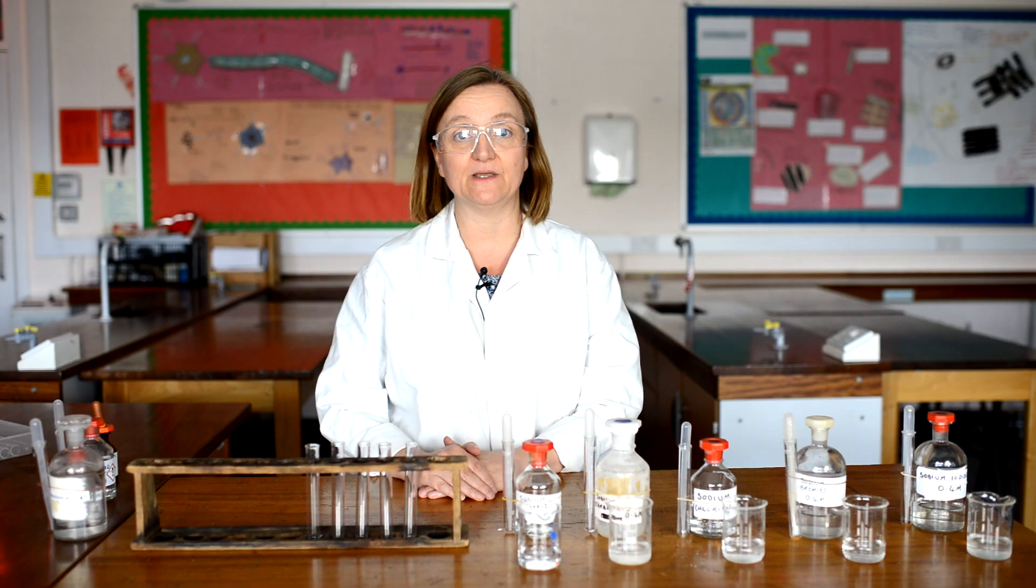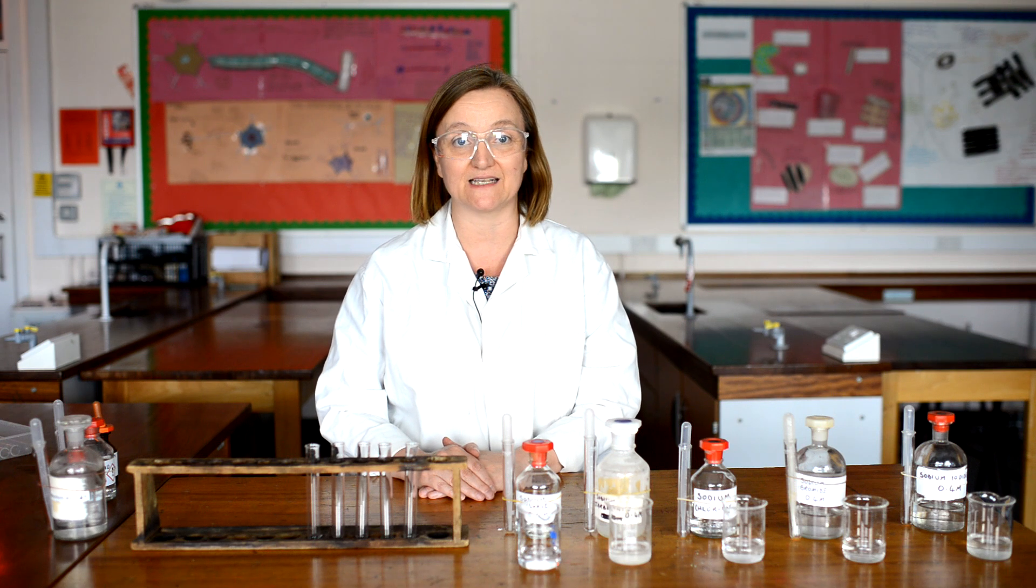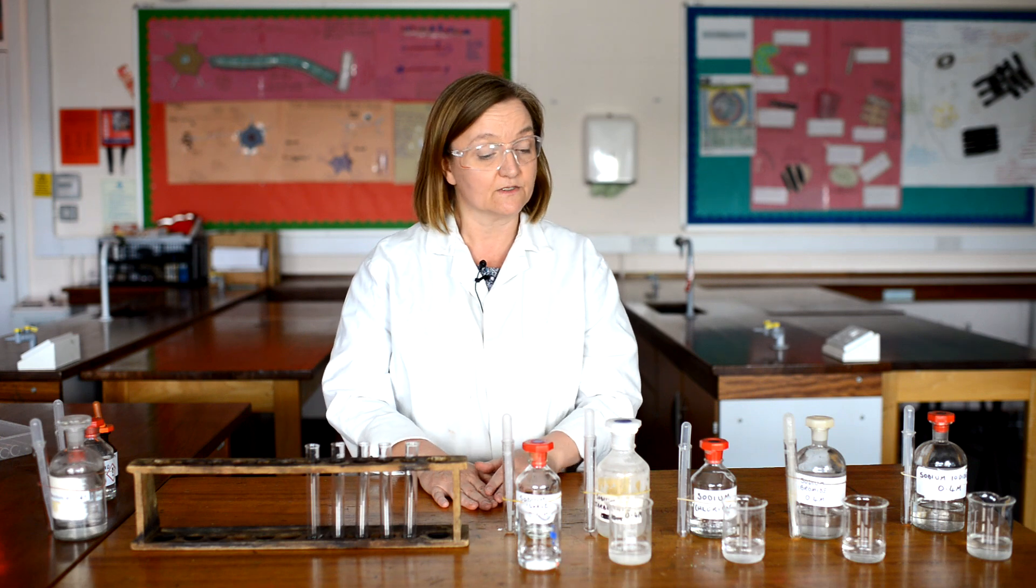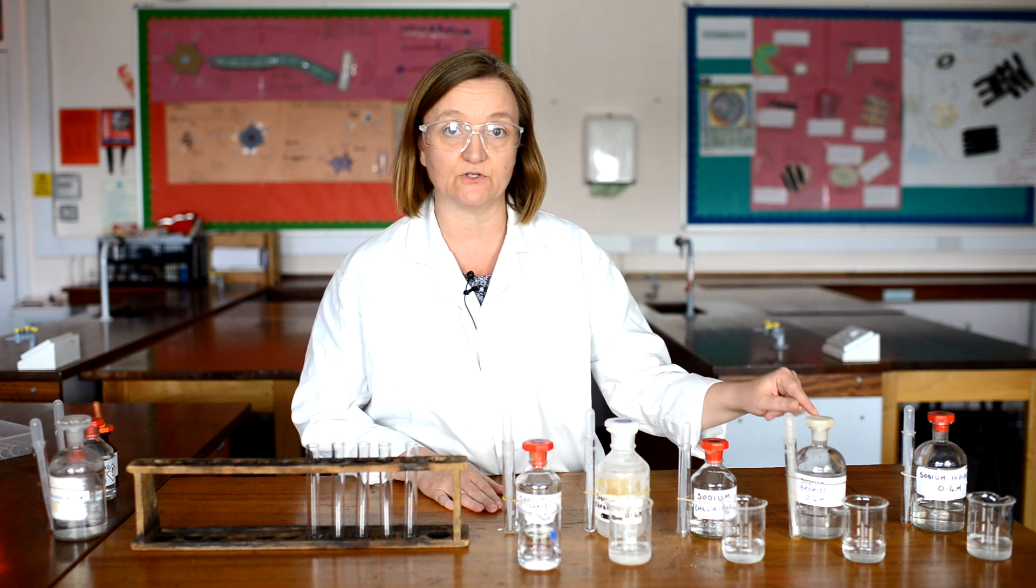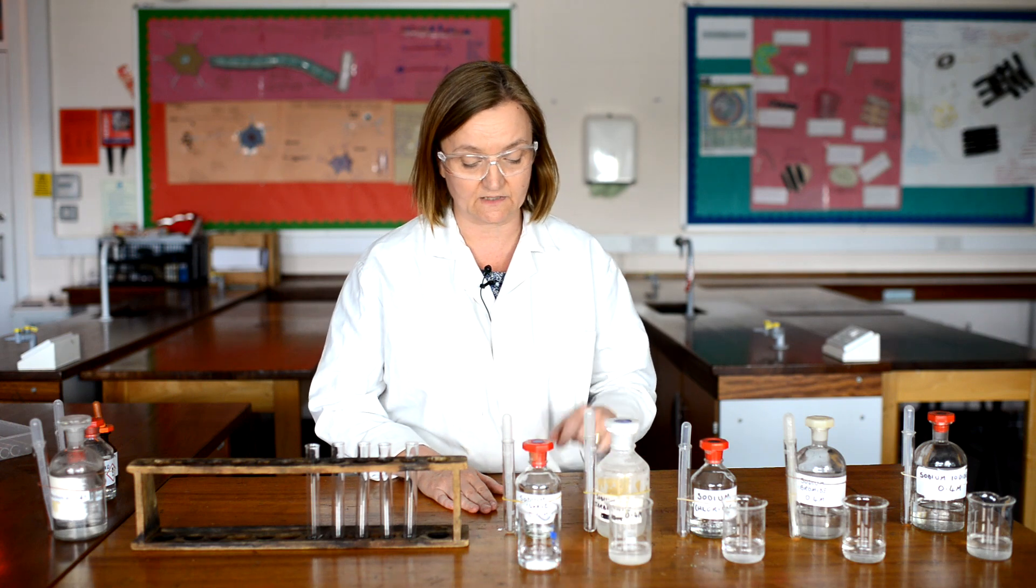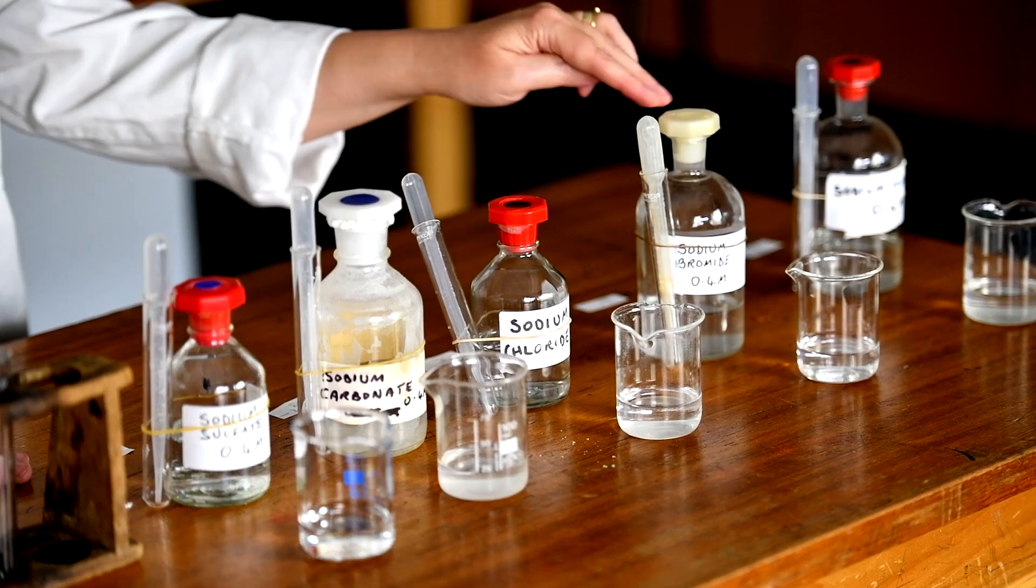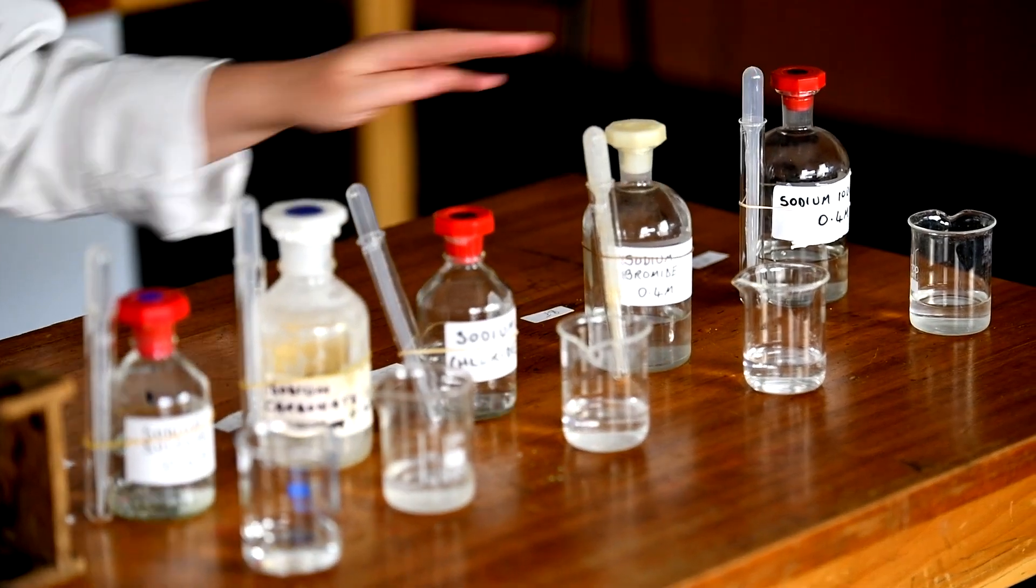So now that we've seen how we can test for different metal ions in solution using flame tests, we're going to change our attention to the non-metal ions. So now I've got five solutions, all that contain sodium, but different non-metal ions with it. So I've got sodium sulphate, carbonate, chloride, bromide and iodide. And we're going to look at three simple tests we can do to identify these different ions.